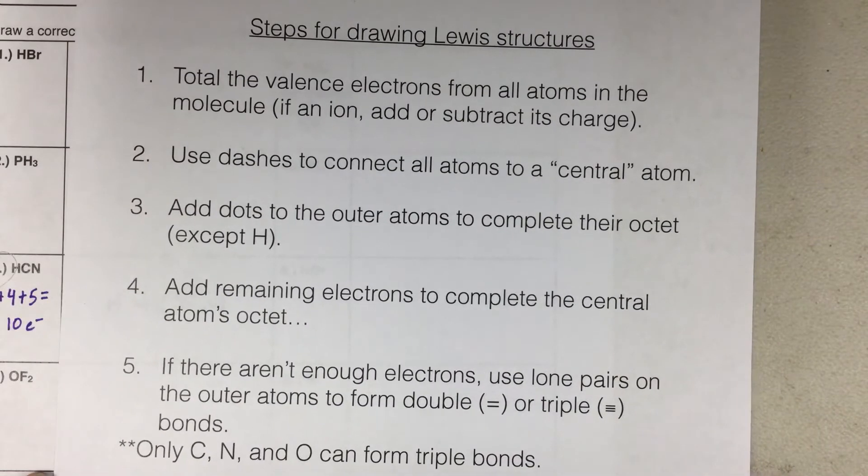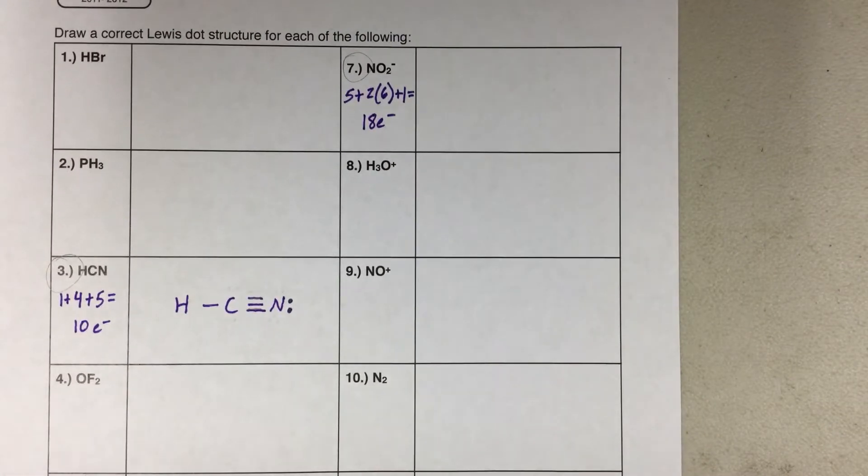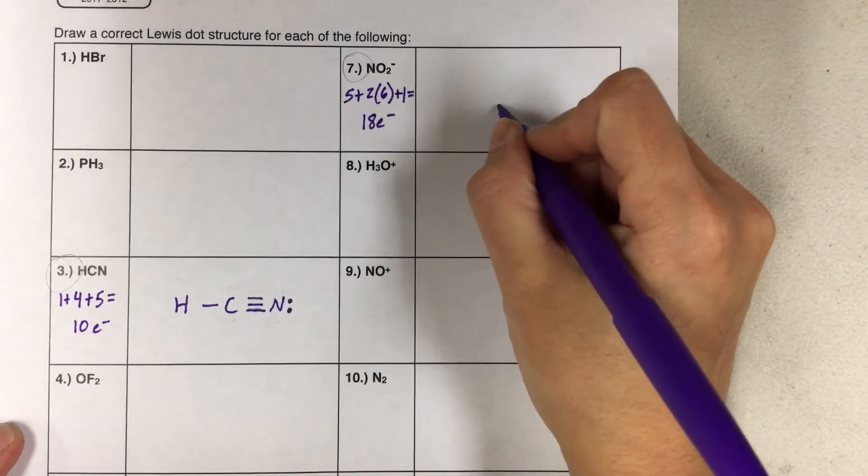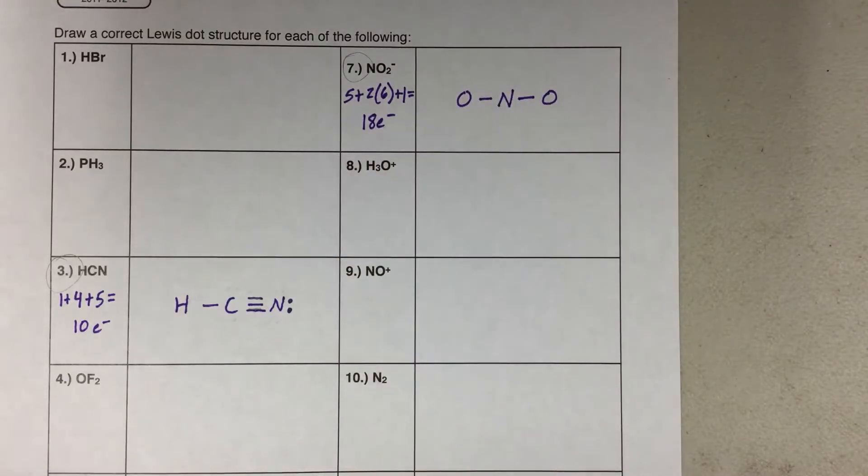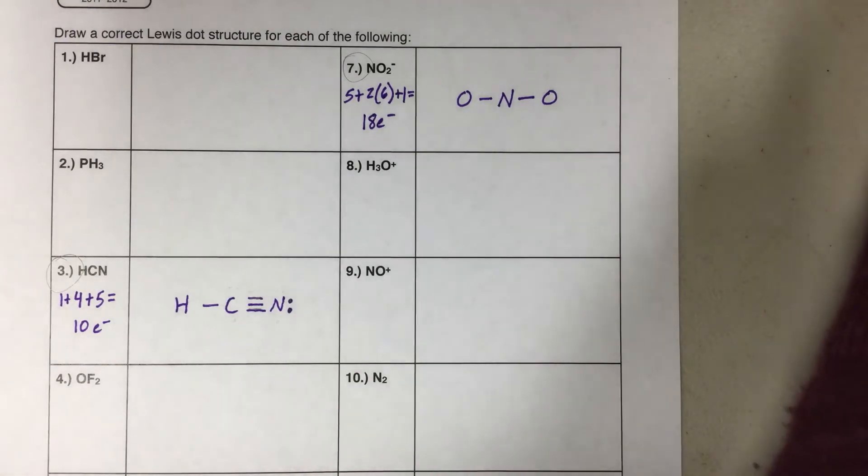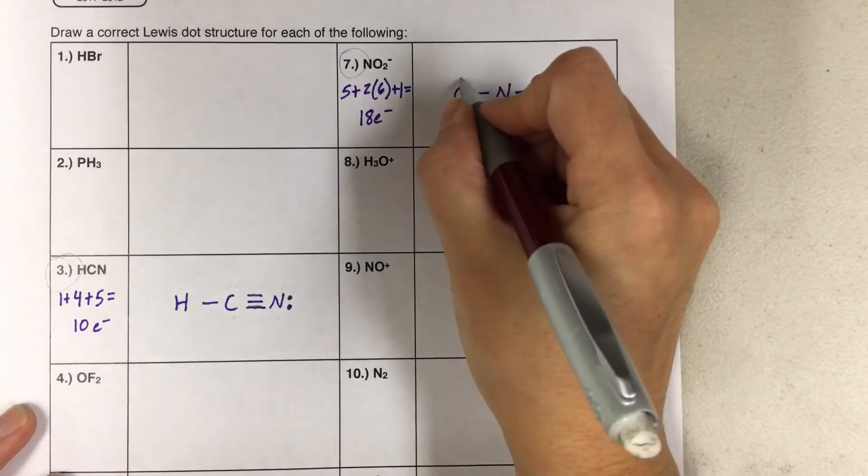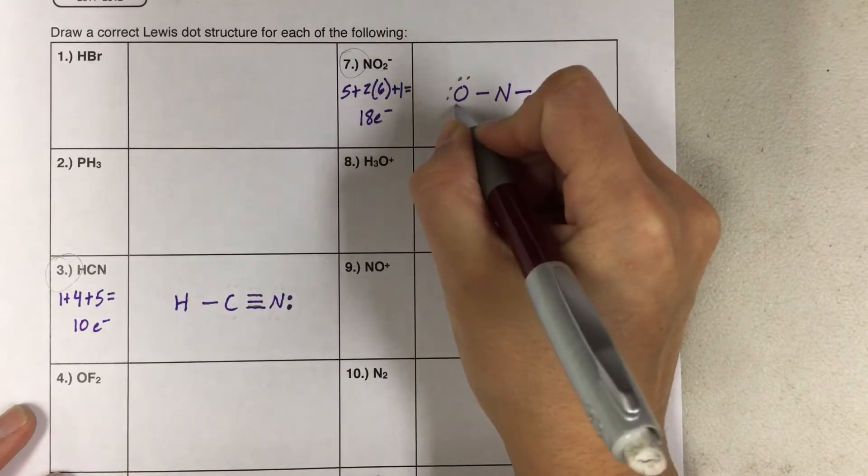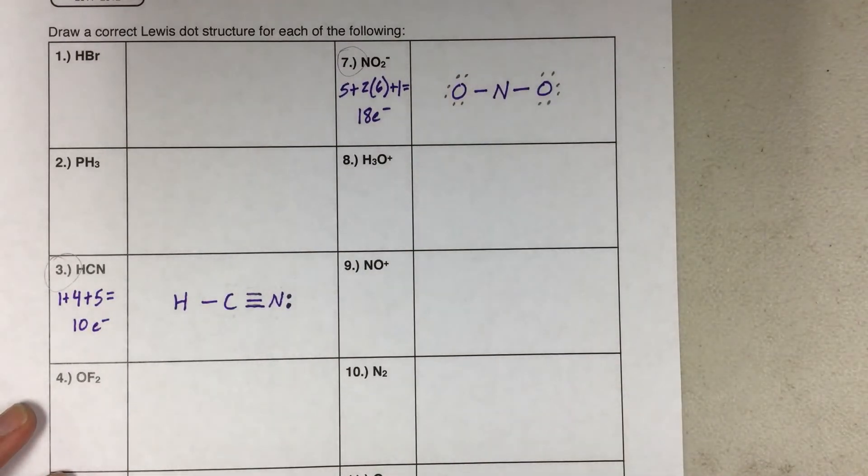We're going to continue our steps to solve this one. First, we need to add dashes to connect all the atoms to a central atom. This one's a little easier to figure out what the central atom is, because usually it's the one that's by itself. So the one by itself here is the nitrogen. So that goes in the middle. And then we need to connect the two oxygens to the central atom. Following our steps, we need to add dots to the outer atoms to complete their octet. We'll add electrons here. Now oxygen has 8. Now this oxygen has 8. They're happy.